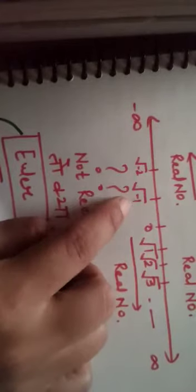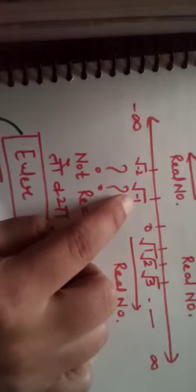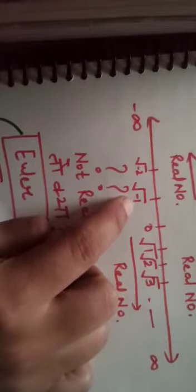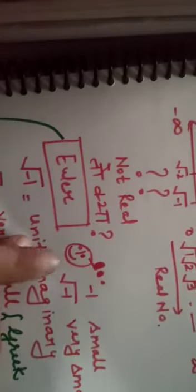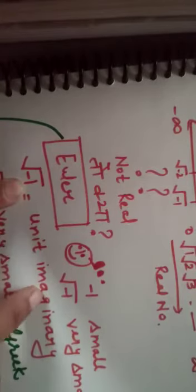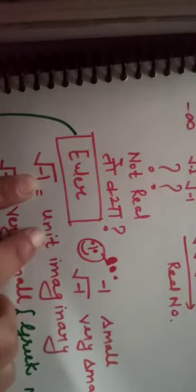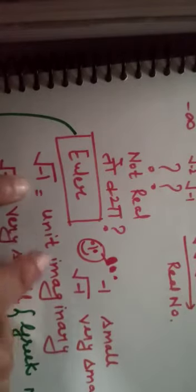Sabse pehla negative number minus one, matlab single, matlab unit, to isko unhone unit ka naam diya. Ab kyonki real number tha nahi, actual mein tha nahi, to imaginary number ka naam diya unhone isko. They were calling it the first imaginary number.